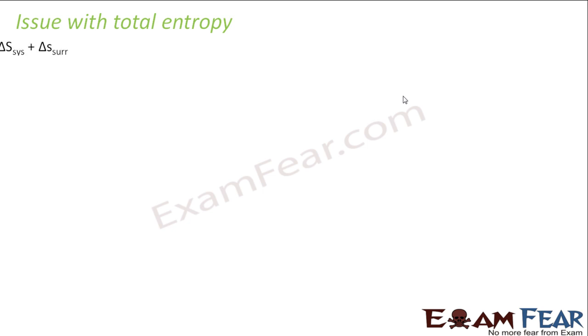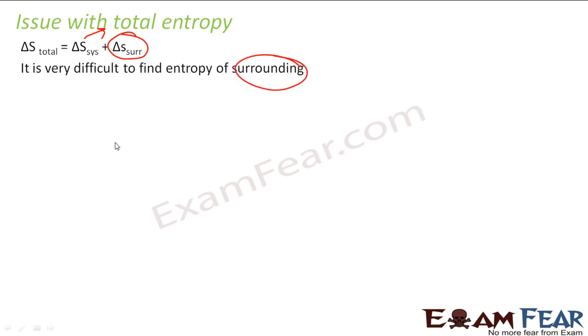But there is an issue with total entropy. As I told, we always talk about total entropy. So what is the issue with total entropy? I was able to find the entropy of the system, but finding entropy of the surrounding is very, very difficult. Till now, I am at a point where I can tell whether the reaction is spontaneous or not based on the total entropy of the system.